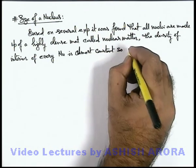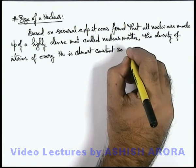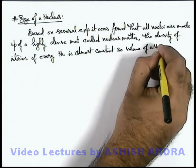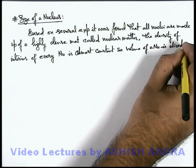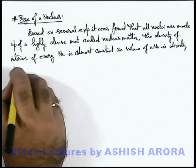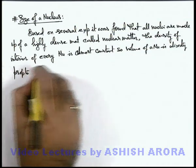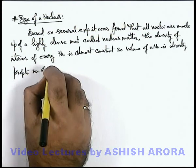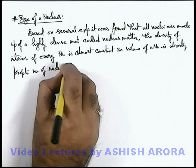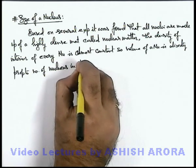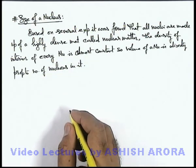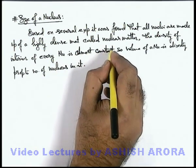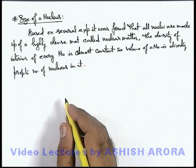So here we can see that the volume of a nucleus is directly proportional to the mass of the nucleus, or it is directly proportional to the number of nucleons in it. The major nucleons, as discussed, are protons and neutrons; all other nucleons do not have any contribution to the mass of the nucleus.